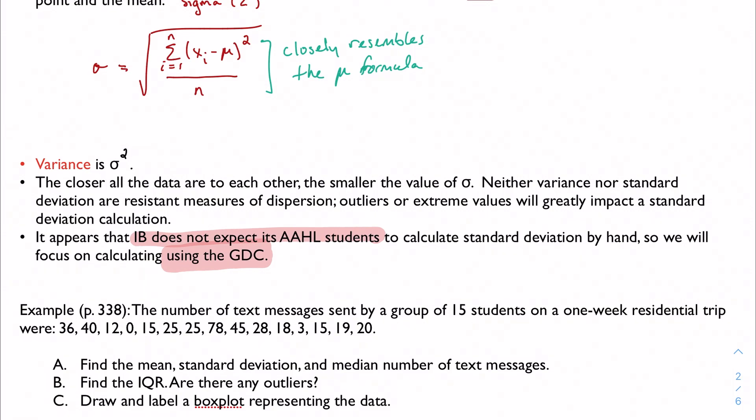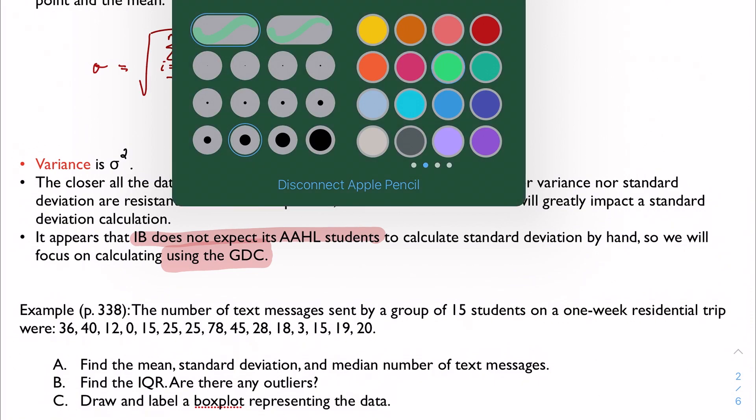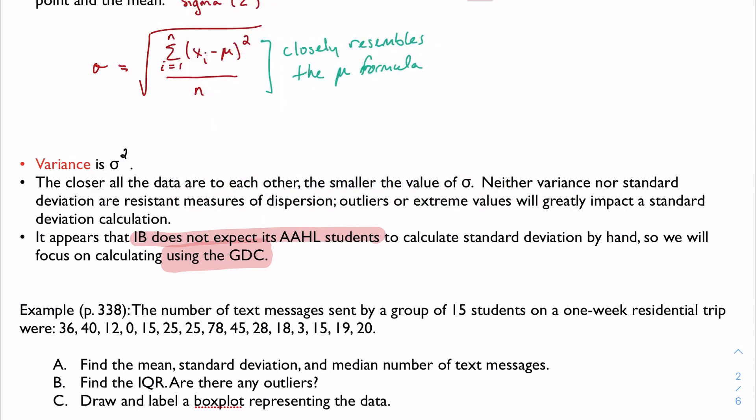The closer all the data are to each other, the smaller the value of sigma, and therefore also sigma squared. Neither variance nor standard deviation are resistant measures.